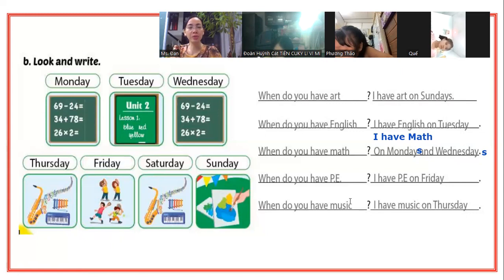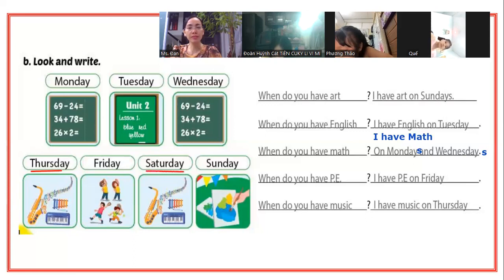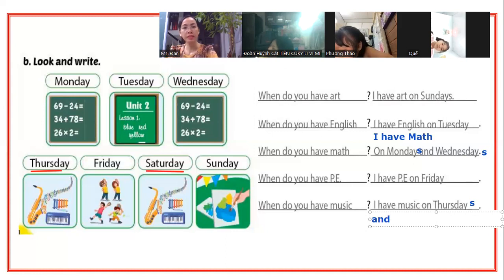When do you have music? Khi nào bạn có môn âm nhạc? Các bạn nhìn vào đây. I have music on Thursdays and Saturdays. Vậy chúng ta có môn music vào 2 ngày nha. Thì các bạn viết vào Thursdays and Saturdays - các ngày thứ 5 và các ngày thứ 7.